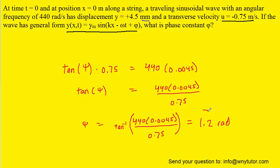And that is indeed the correct answer for the phase constant phi. Make sure that when you plug that into your calculator, your calculator is in radian mode, not degree mode.